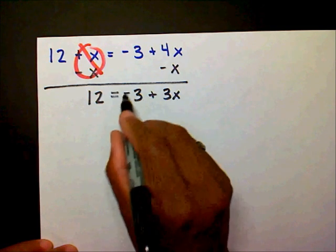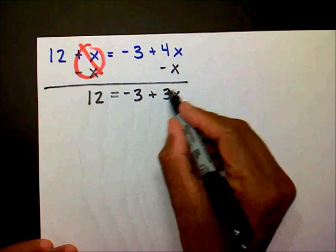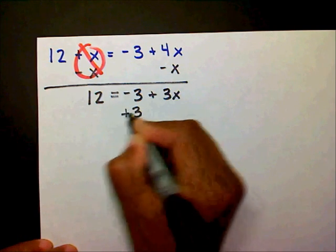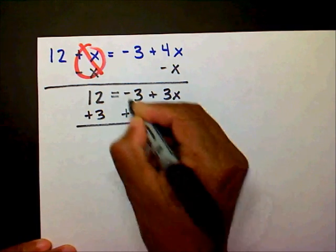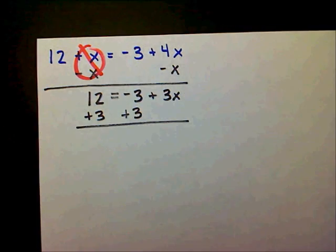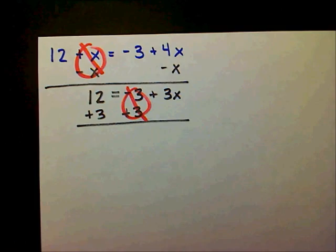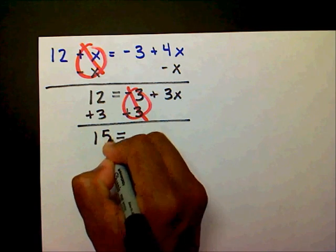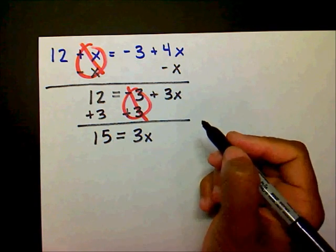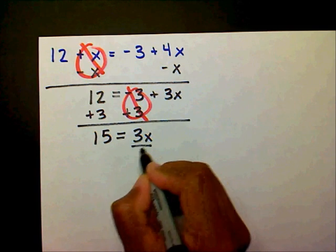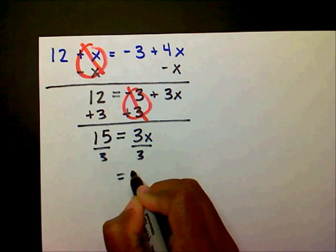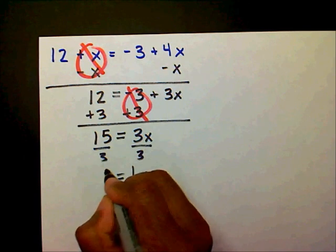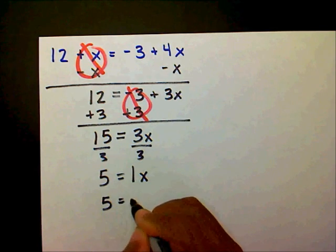Now I need to move this minus 3 to the other side to isolate 3x, so I'm going to add 3 to both sides — adding 3 creates a zero pair. On the left I'm left with 15, on the right I have 3x. I have a one-step equation, so I divide both sides by 3. 3 divided by 3 is 1x, and 15 divided by 3 is 5. Therefore, 5 equals x.